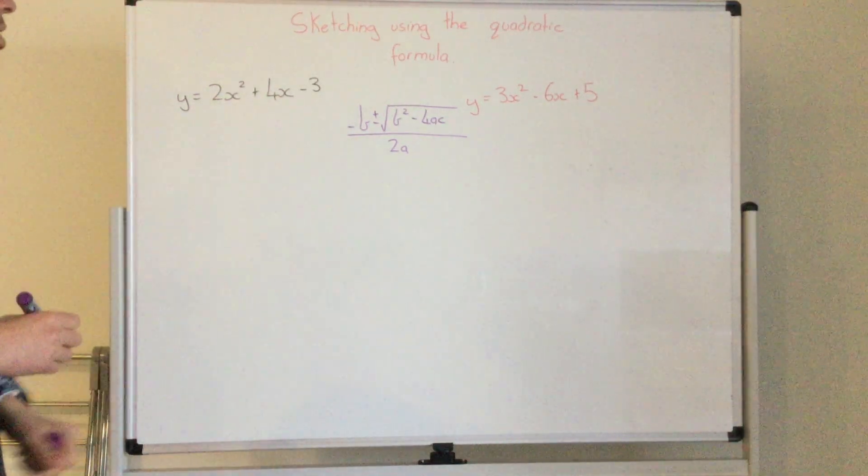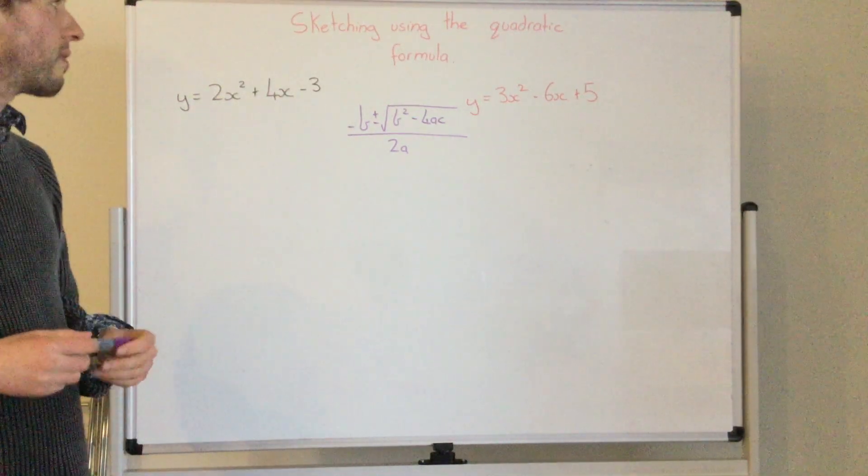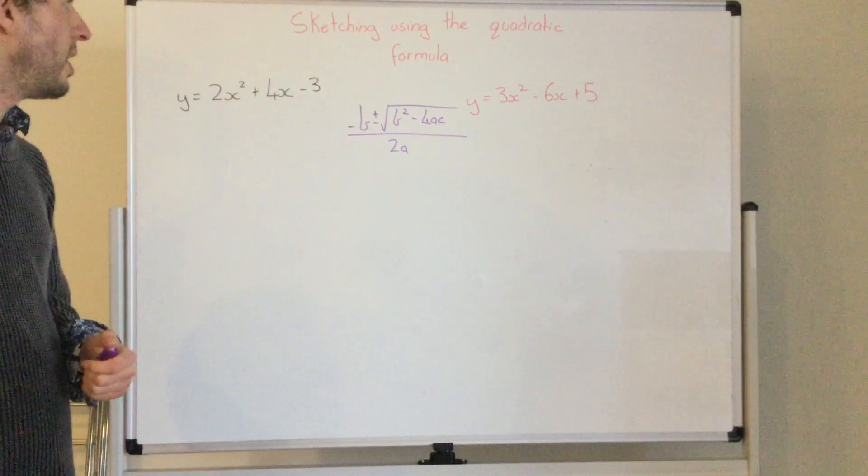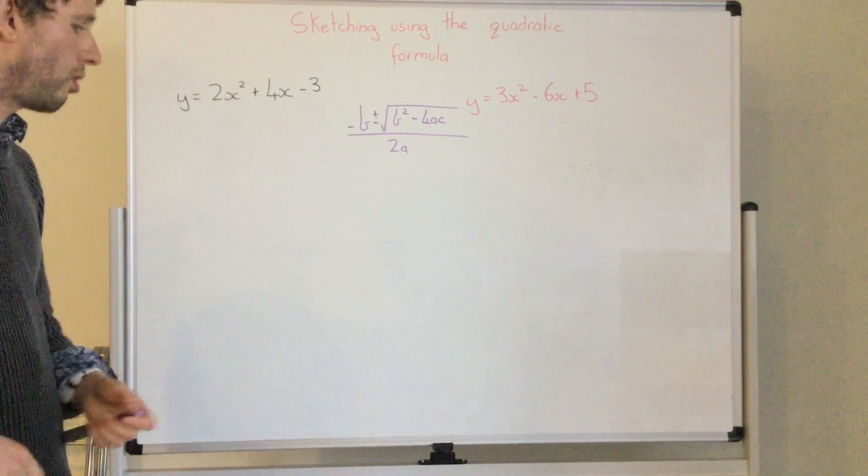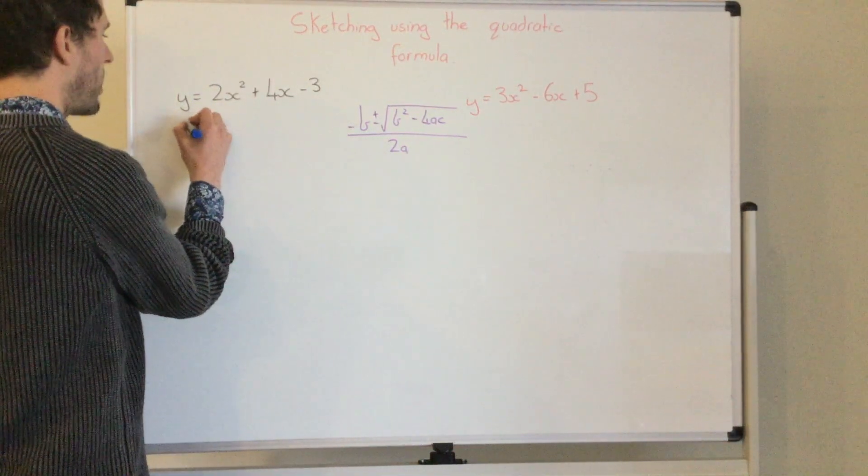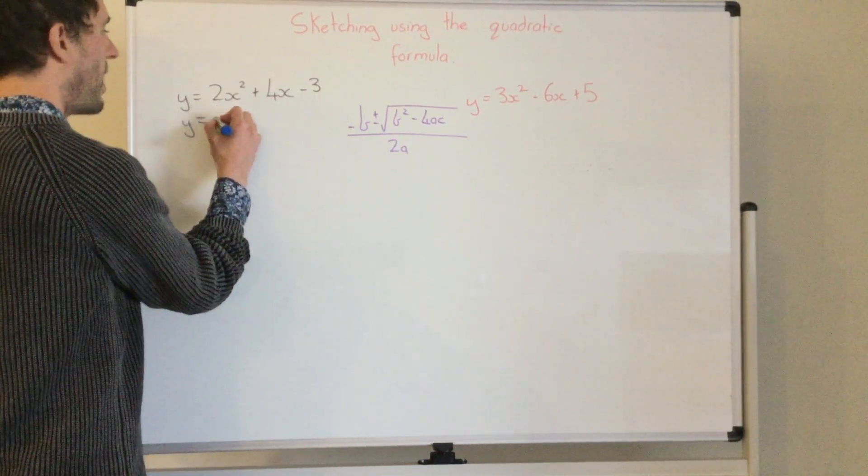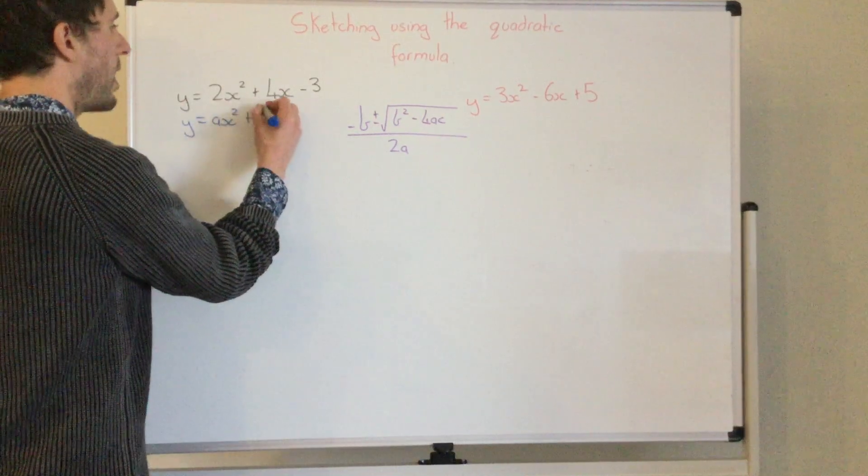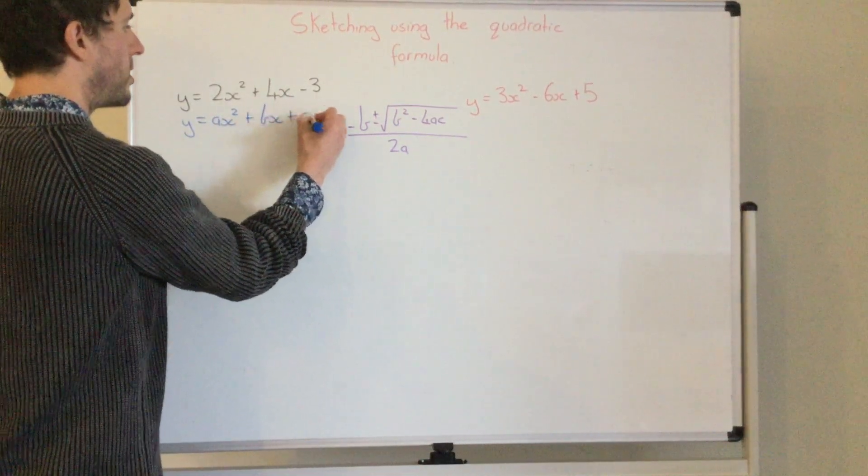So to start off we've got y equals 2x squared plus 4x minus 3. Now to start off I am going to be writing our equation of a quadratic y equals ax squared plus bx plus c.